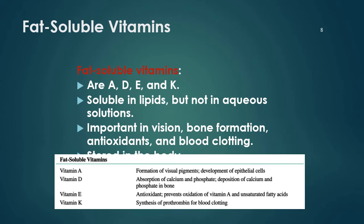Fat-soluble vitamins include vitamins A, D, E, and K. They are soluble in lipids but not in aqueous solution — meaning if you mix vitamin E with water, it will give you two distinct layers: the upper layer is vitamin E and the bottom layer is water. Fat-soluble vitamins are important in vision, bone formation, antioxidant function, and blood protein synthesis, and they are stored in the body.